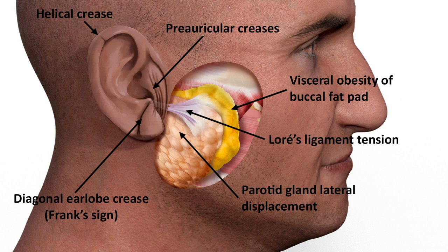The author herein proposes facial visceral obesity, particularly in the sideburn area of the cheek, as the common driver that explains the link between auricular creases and cardiometabolic disorders.